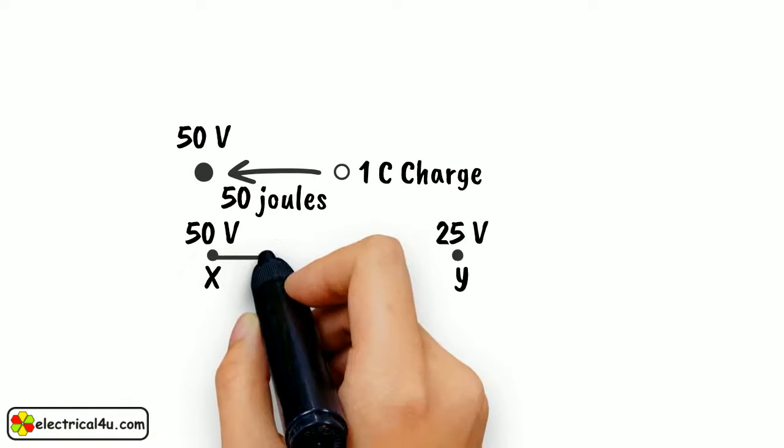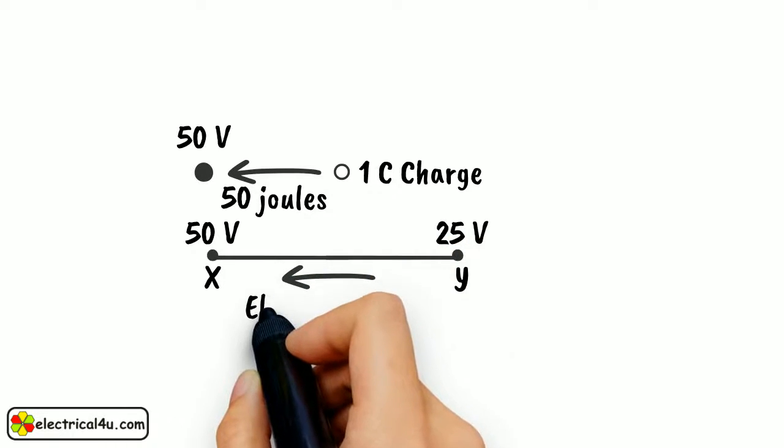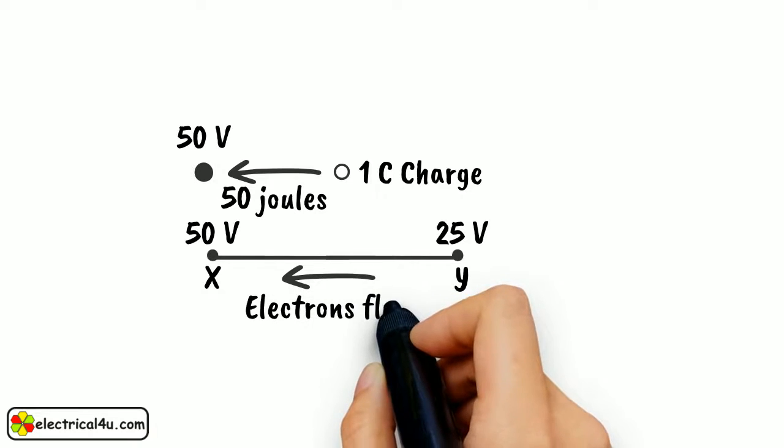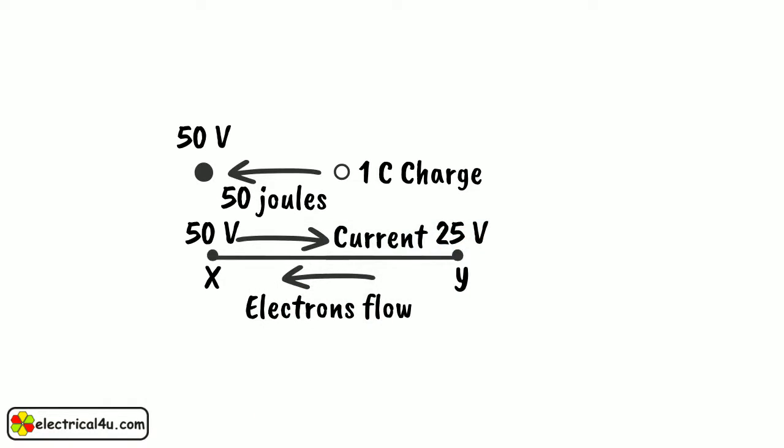When the points X and Y are joined together by a conducting wire, electrons will flow from point Y to point X. We say that current flows from point X towards point Y. The direction of current flow is taken from higher potential to lower potential, while the flow of electrons are actually in the opposite direction.